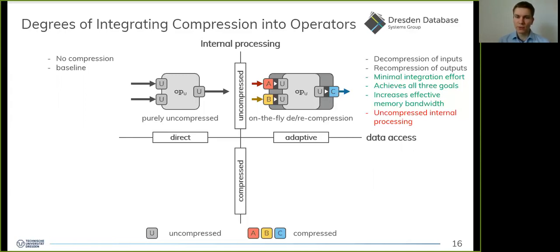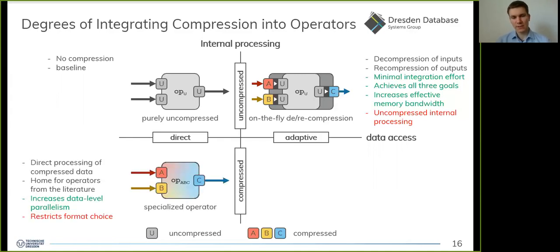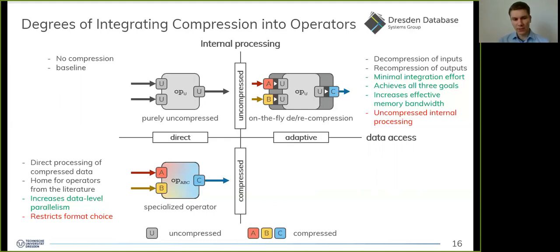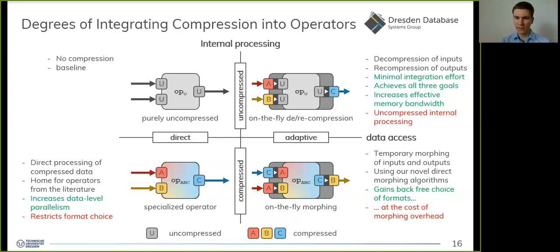The problem with on-the-fly de/recompression is that it processes uncompressed data internally, wasting the potential of processing compressed data directly. At this point, specialized operators enter the stage — these are tailored to a very specific combination of input and output formats and serve as a home for operators from the literature such as BitWeaving or ByteSlice. Besides improved effective memory bandwidth, this degree also increases data-level parallelism by working directly on compressed data, especially in combination with SIMD instructions. However, we are restricted to certain formats for intermediate results, which may not be desirable in all cases.